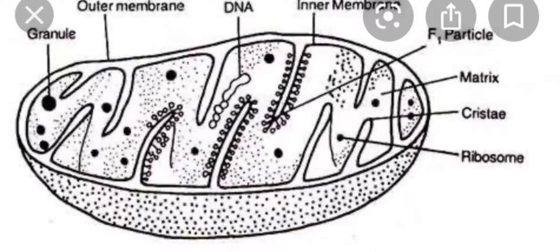The mitochondria was observed in the flight muscle of insects by Kolliker in year 1880, and the term mitochondria was given by C. Benda.